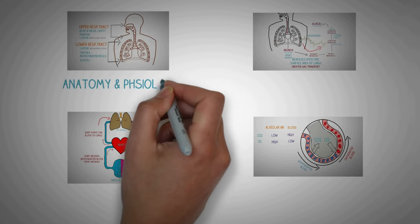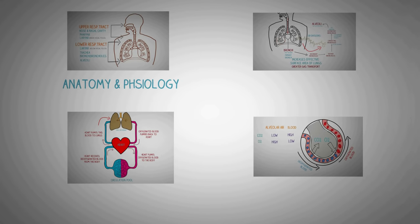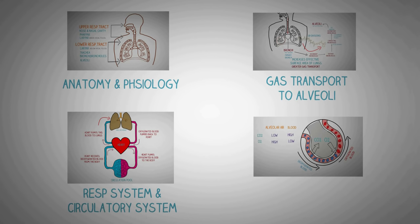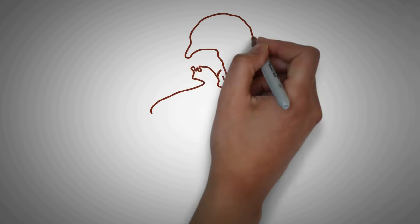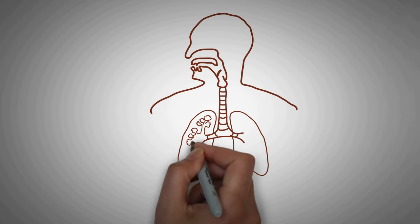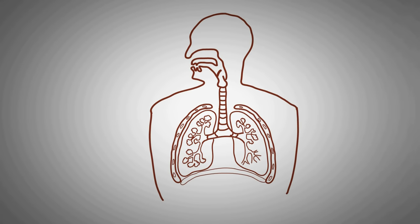In this video we will first talk about the brief anatomy and physiology of the human respiratory system, then we will discuss how gas transport to the alveoli occurs. We will talk about how the human respiratory system works together with the circulatory system, and then we will talk about how gas exchange happens in the alveoli.